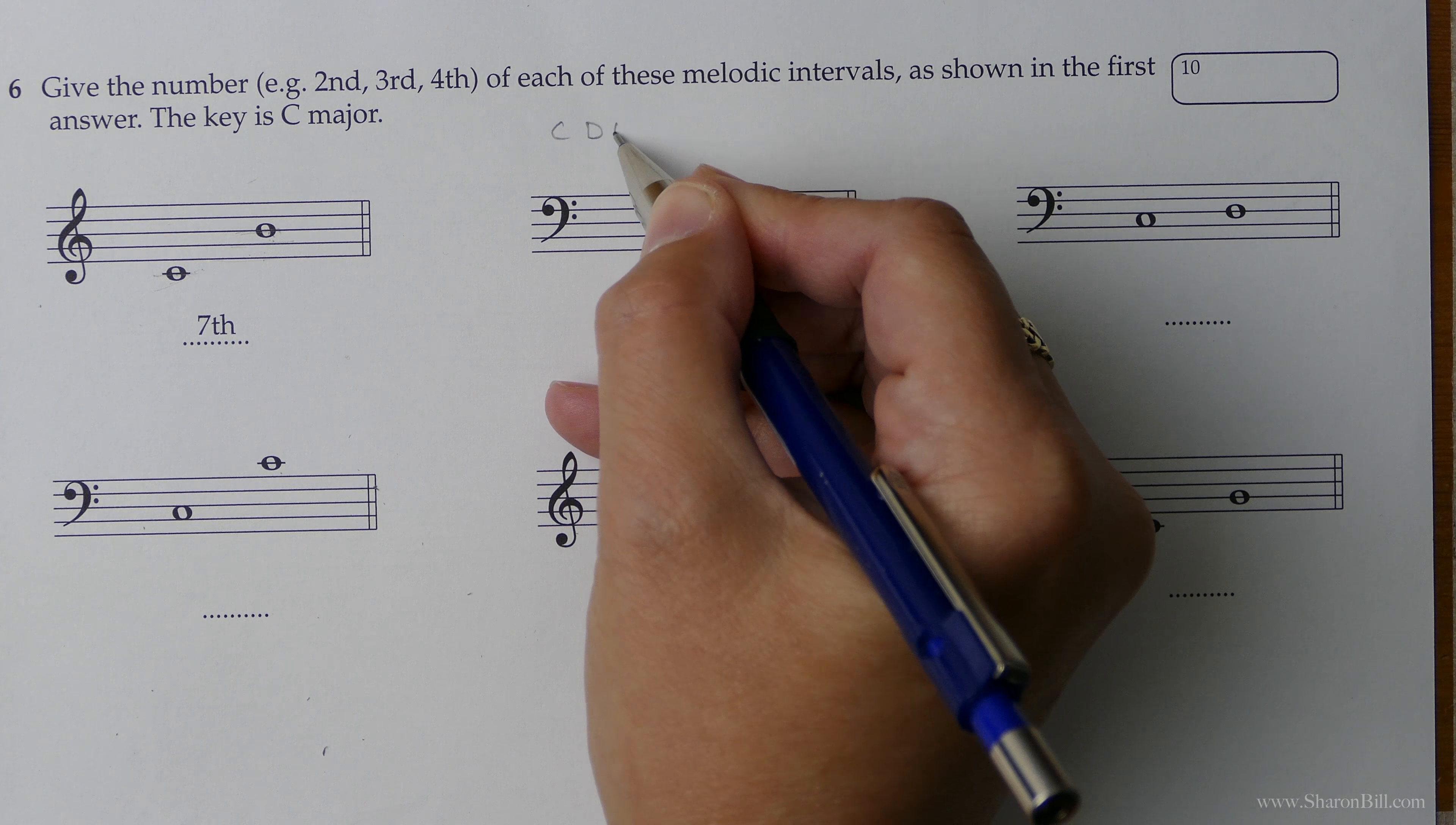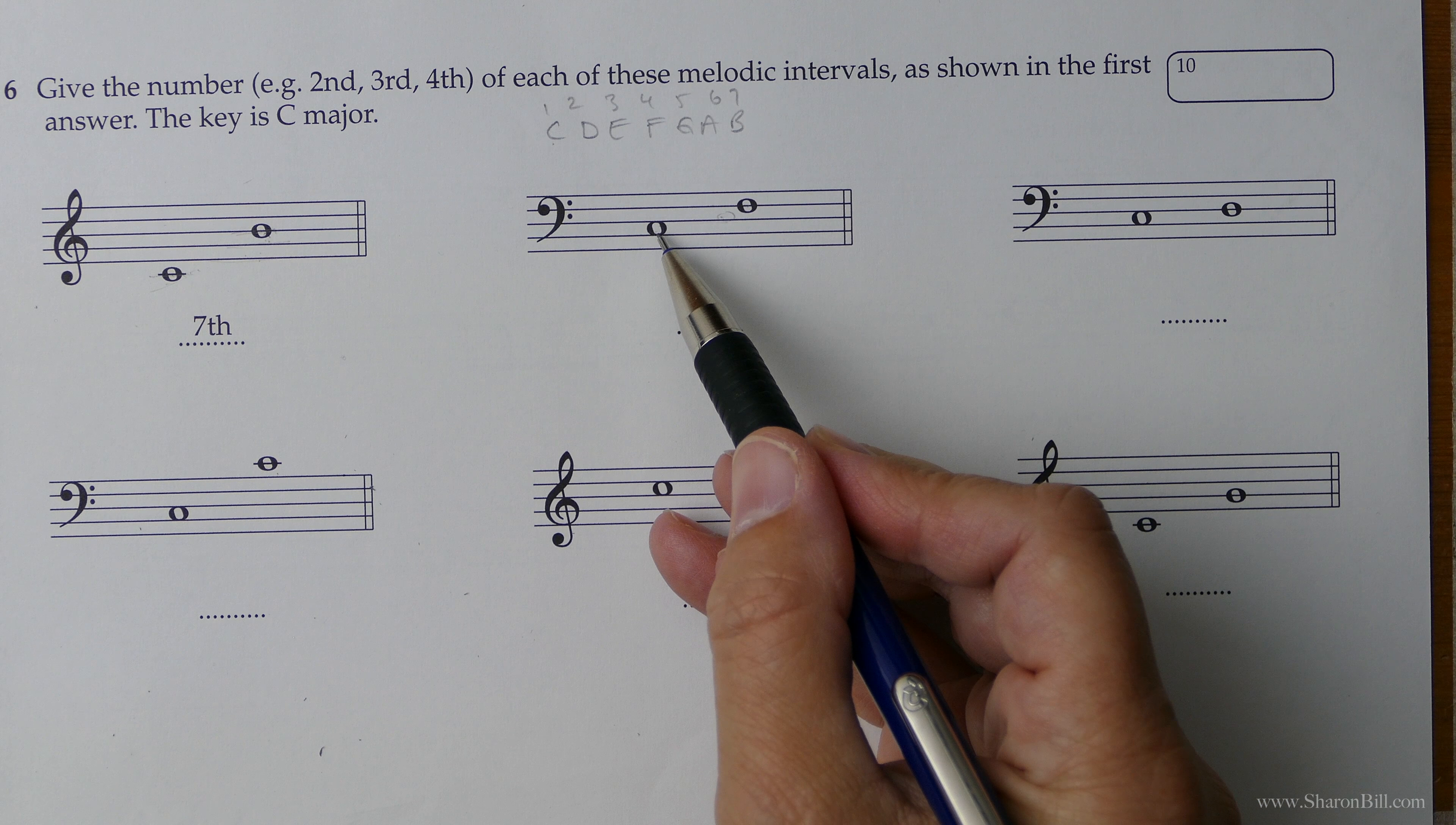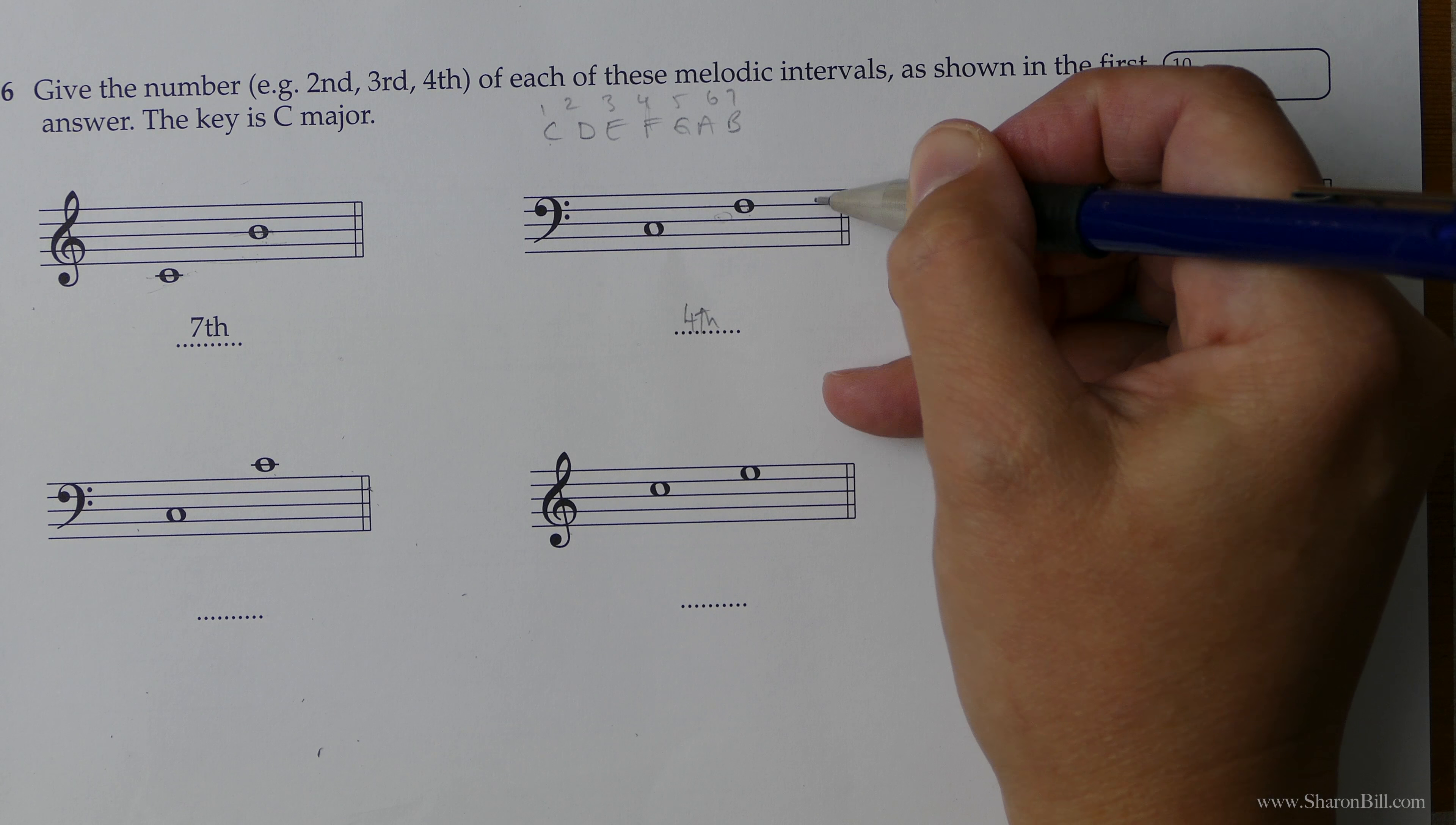Alternatively, if you find that difficult, you can just write out the letters of your scale. C, D, E, F, G, A, B, and C of course comes back. One, two, three, four, five, six, seven. And we can see here we've gone from a C to an F. We can double check that that's a fourth.